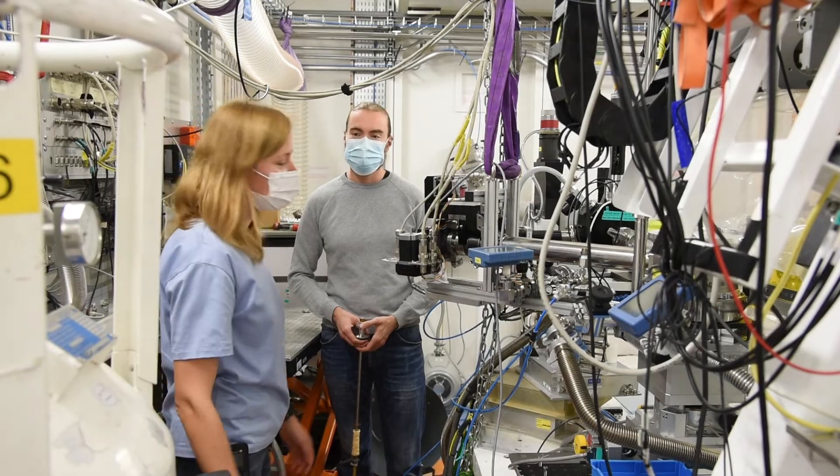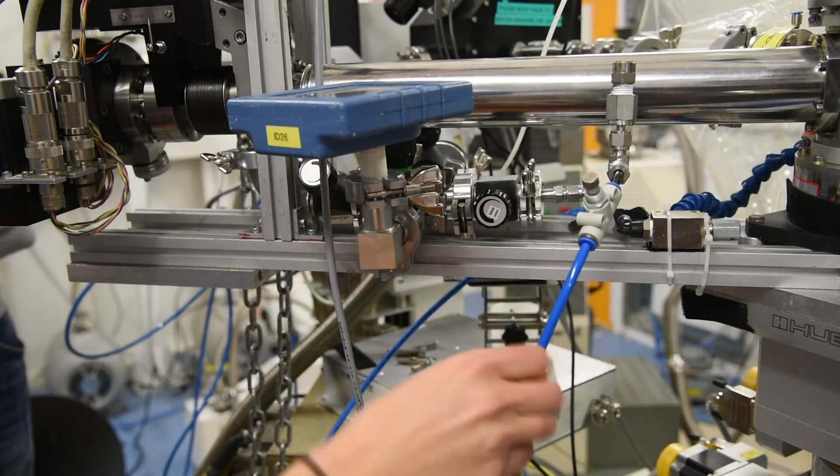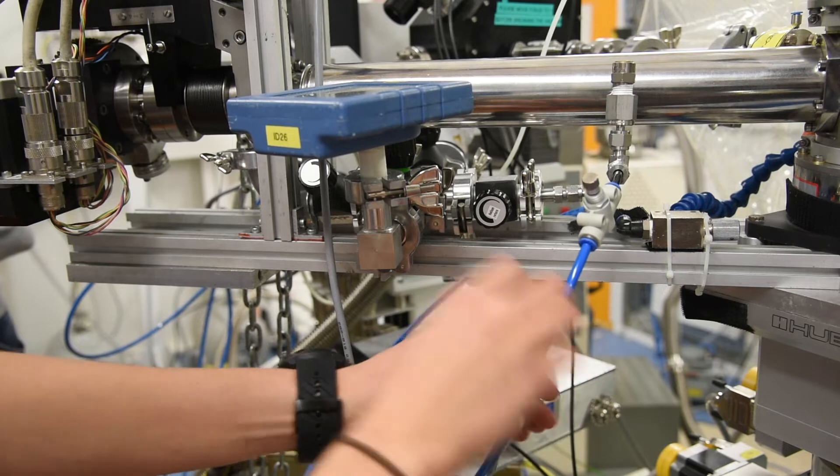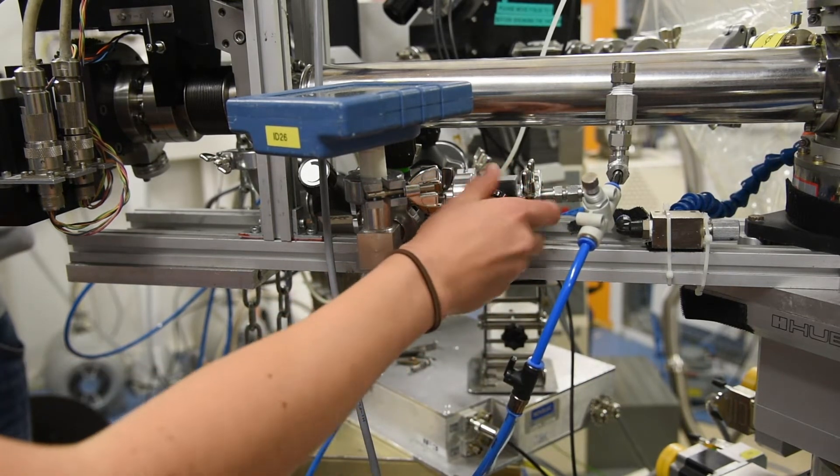First, turn on the sample pressure gauge. Fill the sample chamber with helium. For this, open the plastic valve and larger black metal valve.